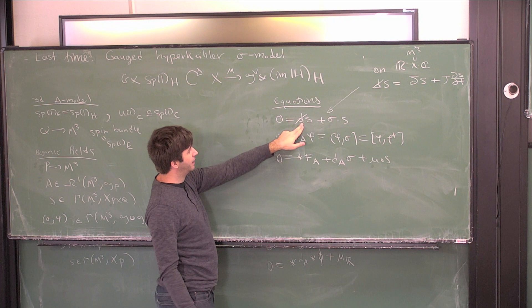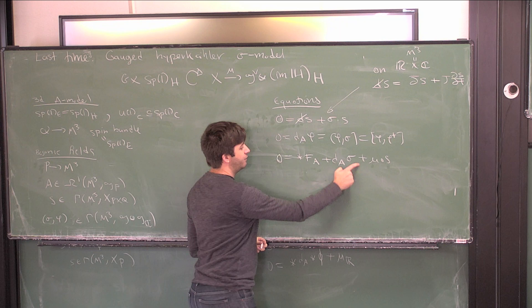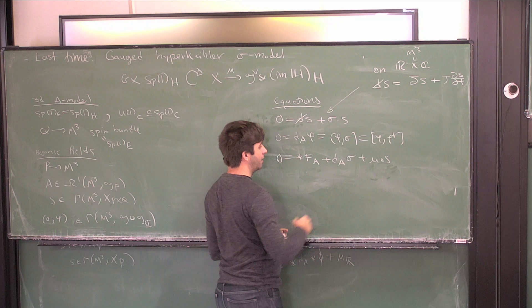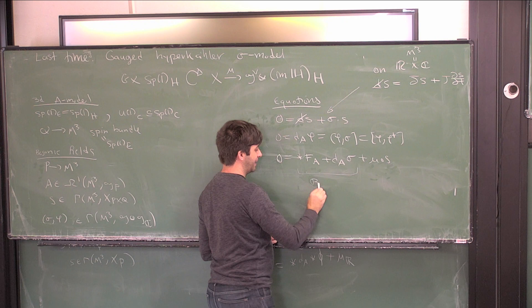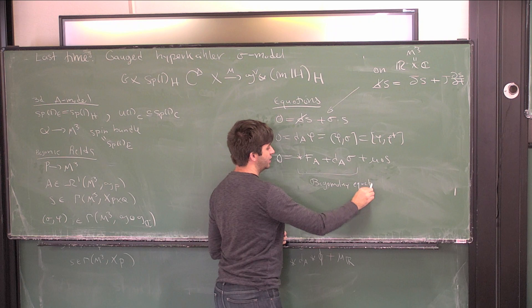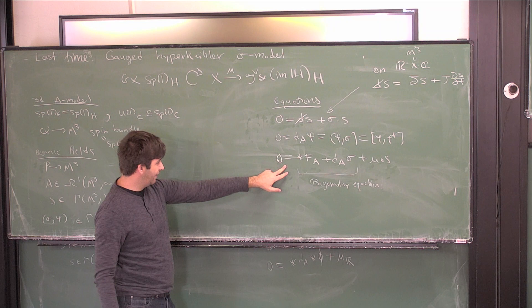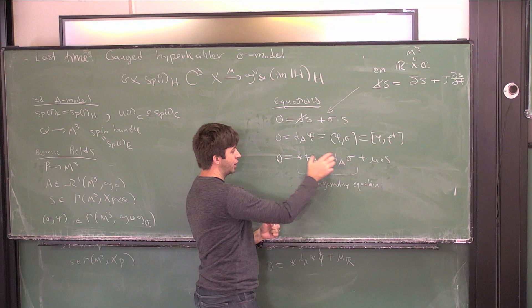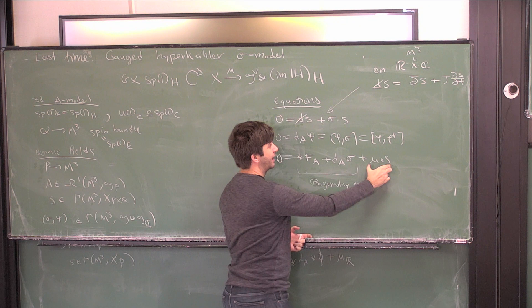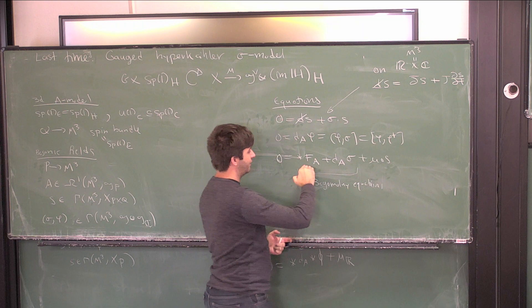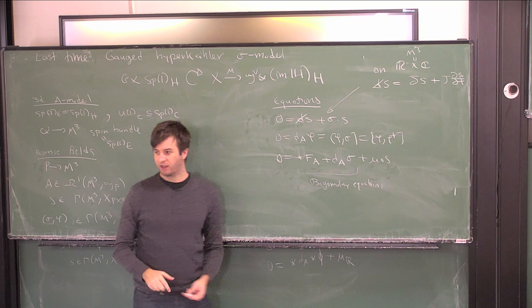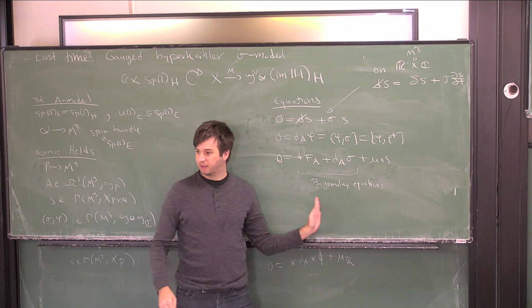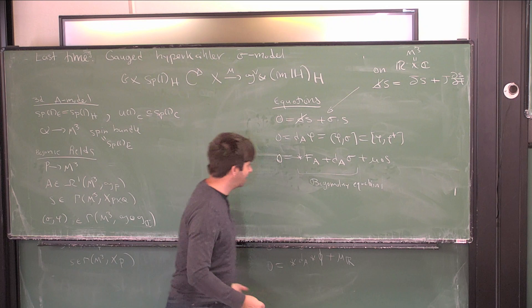If your X was a point, you wouldn't have the moment map term, and this term would be what are called the Bogomolny equations — equations that describe magnetic monopoles. Another interesting specialization: if you didn't have the sigma term and just had the curvature term equal to the moment map, and you're in an R times C scenario with the connection trivial in the t direction, then you're basically setting a vortex equation. So this is some mix of the vortex equations, the Bogomolny equations, and the Dirac equation.